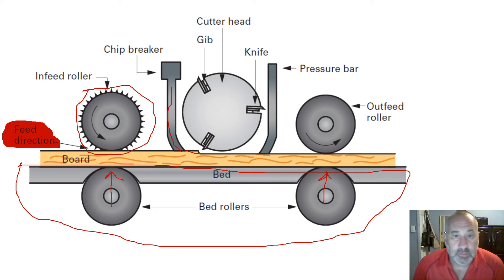A stationary thickness planer will have three knives minimum or it will have the spiral head which has the small square blades, knives that you can rotate through. So there are all kinds of different options but three long knives minimum.